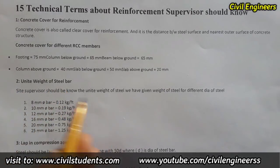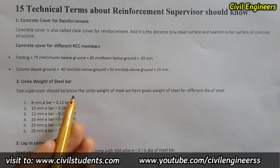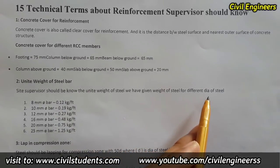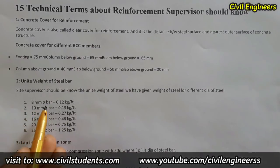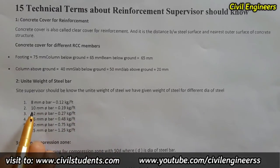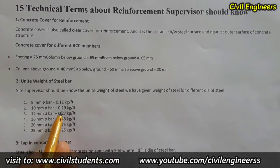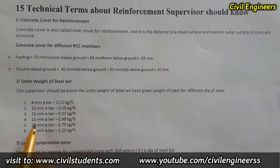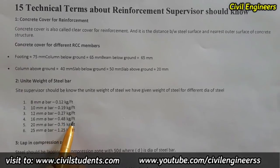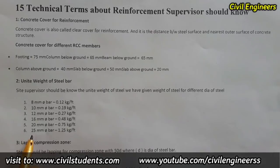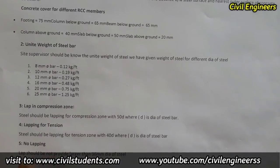The second term is unit weight of steel bar. Every site supervisor should know the unit weight of steel. For different diameters: 8 mm = 0.12 kg/ft, 10 mm = 0.19 kg/ft, 12 mm = 0.27 kg/ft, 16 mm = 0.48 kg/ft, 20 mm = 0.75 kg/ft, 25 mm = 1.25 kg/ft.